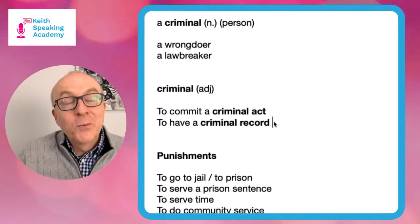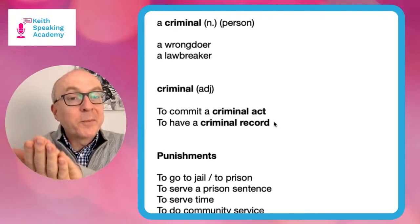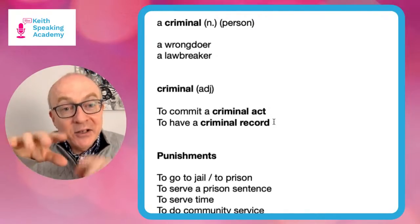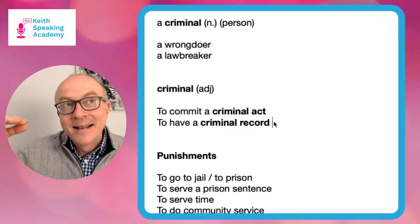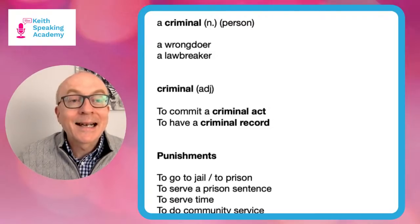If you are a criminal, you have a criminal record. The police have your name, photo, and mugshot in their database - the classic mugshot with a number and profile. When you commit a crime, the police have your mugshot, photo, number, your ID, your name. You have a criminal record. And if you have a criminal record, it's very hard to get a job.